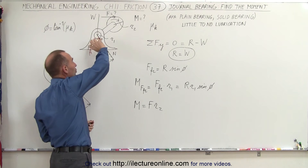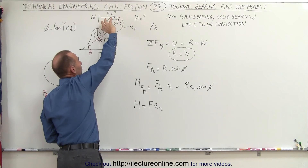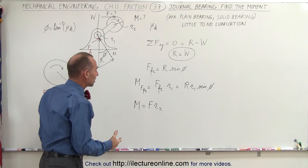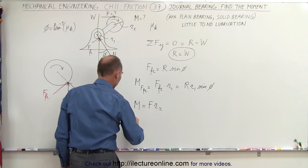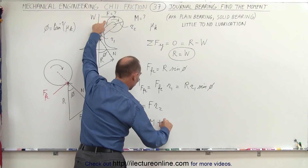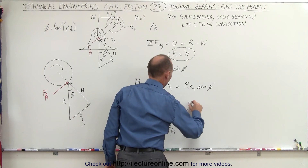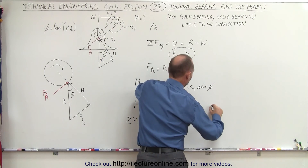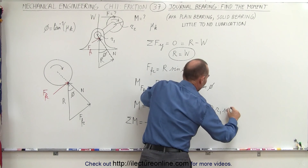The friction force moment tries to slow down rotation and acts counterclockwise. The applied force moment that overcomes friction acts in the clockwise direction, so it is negative. Setting the total moment equal to zero: F × r2 = R × r1 × sin(φ), where F is the applied force, r2 is the wheel radius, R is the reaction force, r1 is the axle radius, and φ is the friction angle.